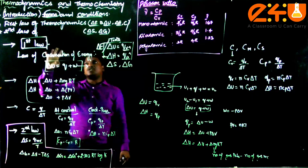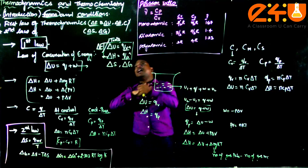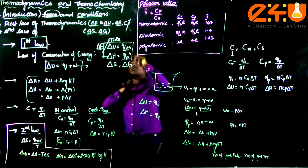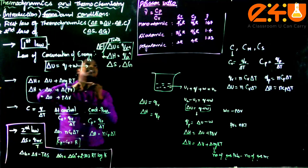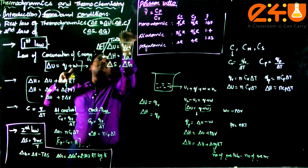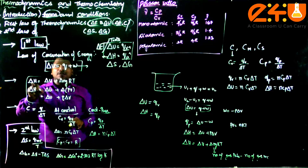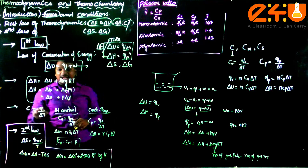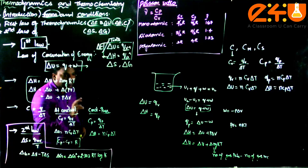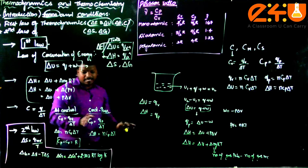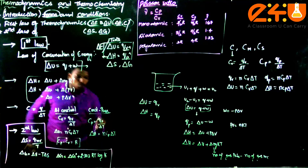To summarize the four topics: the first type of questions is based on system types (open, closed, isolated) and all processes and properties. The second type comes from the First Law — internal energy, enthalpy, and heat capacity. Key formulas: ΔU = q + w, ΔH = ΔU + ΔngRT, C = q/ΔT, Cv = qv/ΔT, Cp = qp/ΔT, ΔU = nCvΔT, and ΔH = nCpΔT.